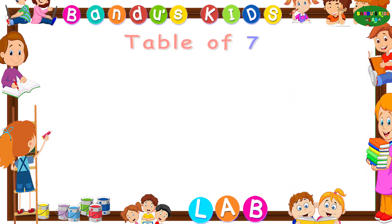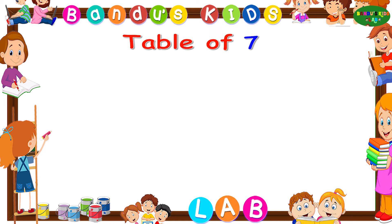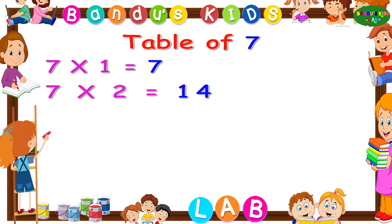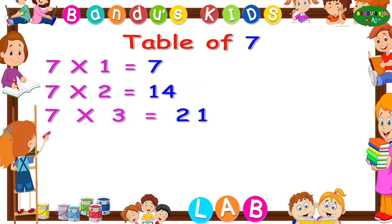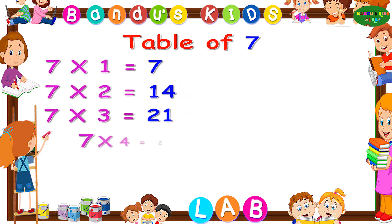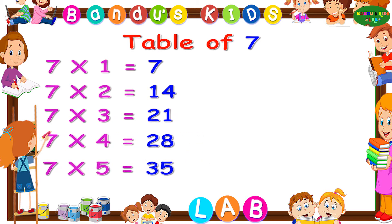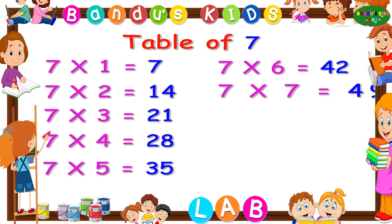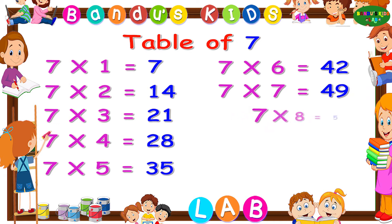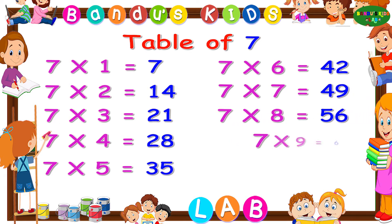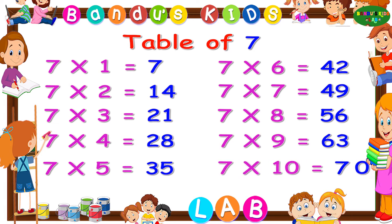Now let's revise the table of seven one more time by singing. Seven ones are seven. Seven twos are fourteen. Seven threes are twenty-one. Seven fours are twenty-eight. Seven fives are thirty-five. Seven sixes are forty-two. Seven sevens are forty-nine. Seven eights are fifty-six. Seven nines are sixty-three. Seven tens are seventy.